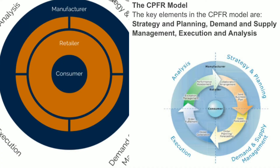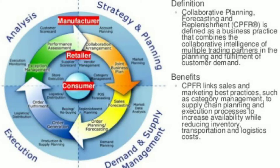Looking at the CPFR model diagram: the customer is the creator of sales demand for a product, so the customer is at the center of the CPFR model. The customer is surrounded by the retailer and the supporting activities provided by the retailer, such as category management, replenishment management — which means supplying through the supply chain — buying, logistics and distribution, store execution, supply scorecard and vendor management.